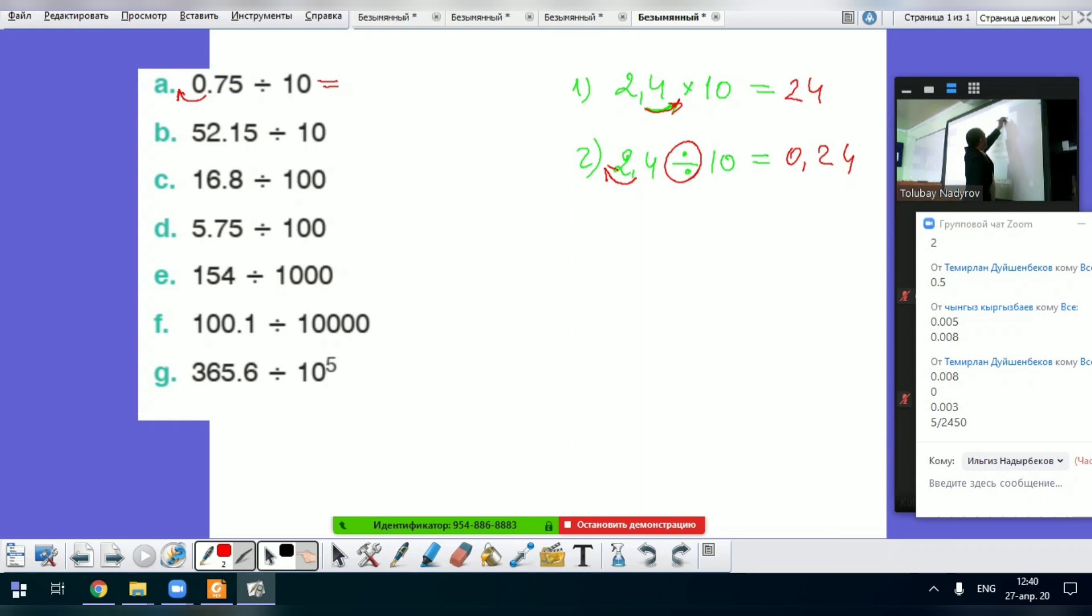Okay, decimal point moves one place to the right side, so it's equal to 0.075. Okay, if there is one zero, so decimal point moves one place to the right side, left side.